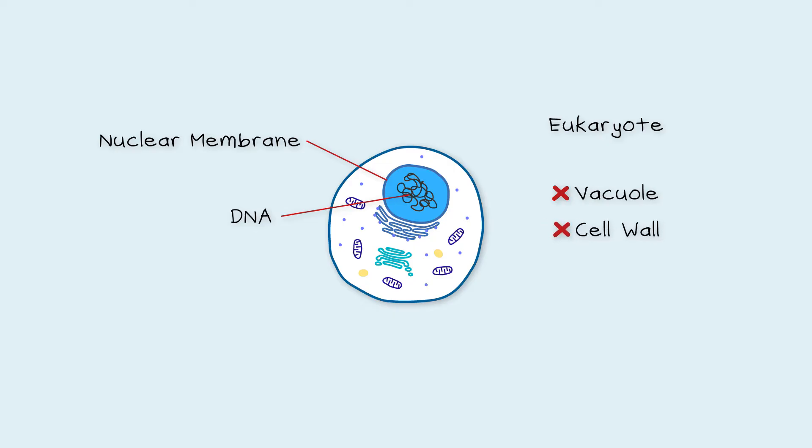Animals don't make energy from light. Instead, the mitochondria can make energy from fats, proteins and sugars. Every cell in your body has the same set of DNA instructions unique to you.